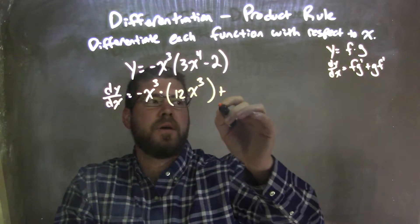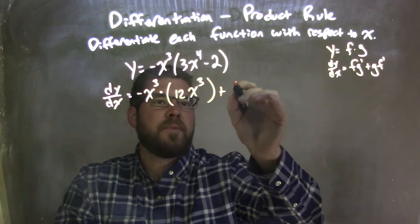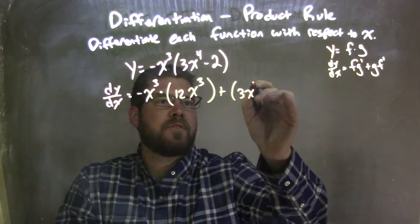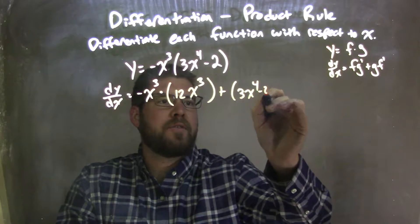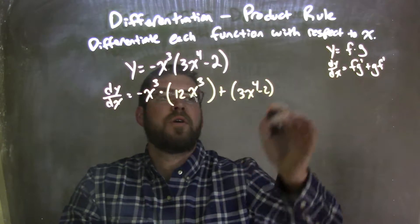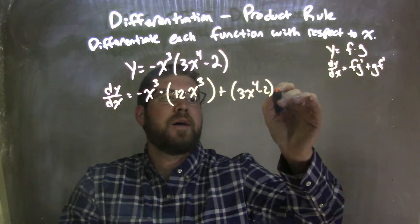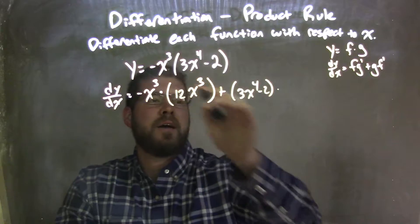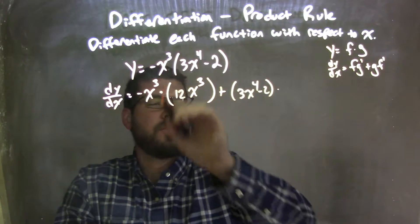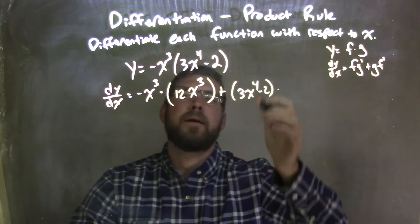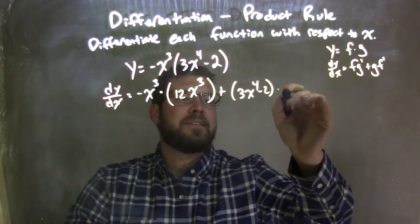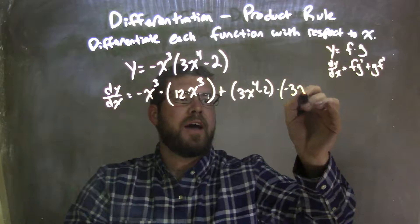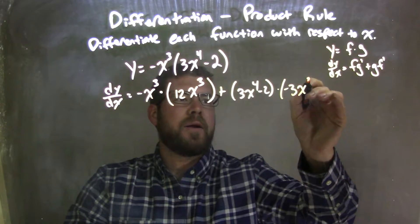Plus the second one, 3x to the fourth minus 2, times the derivative of that — right there, the first part — and that's negative 3x squared.